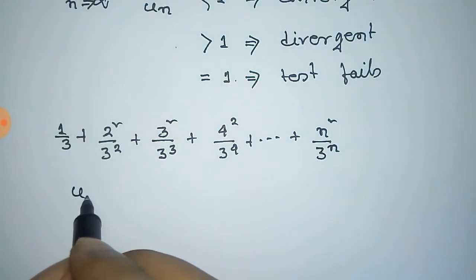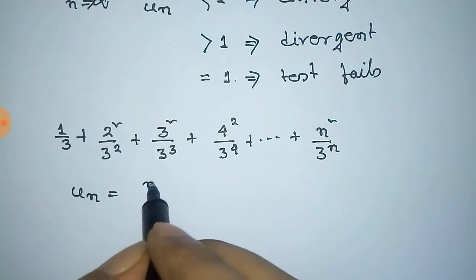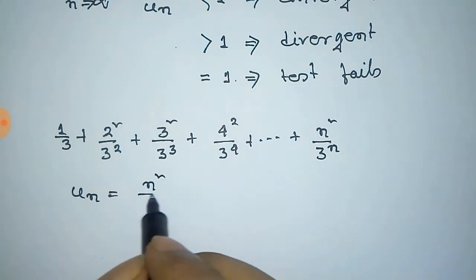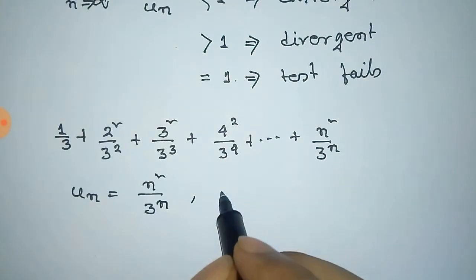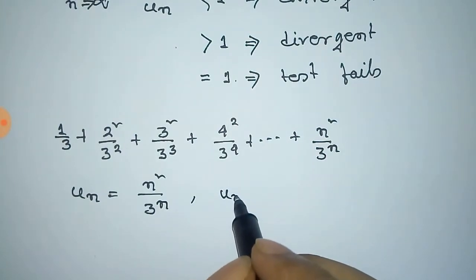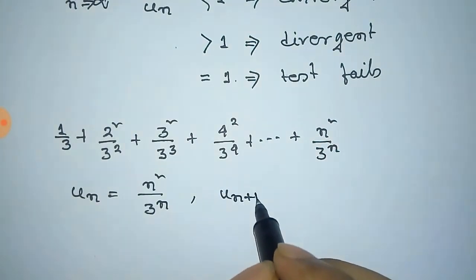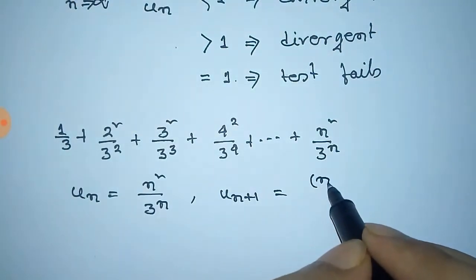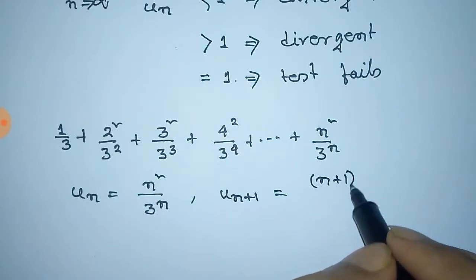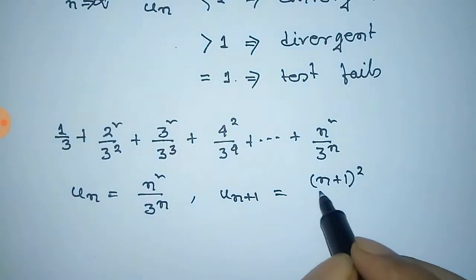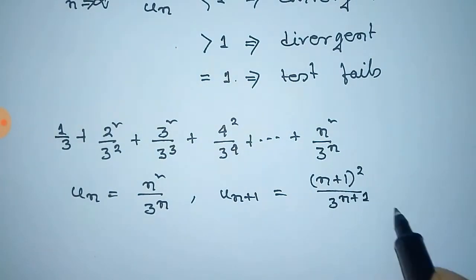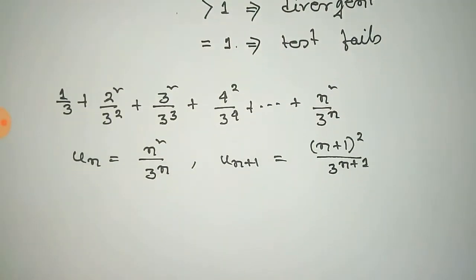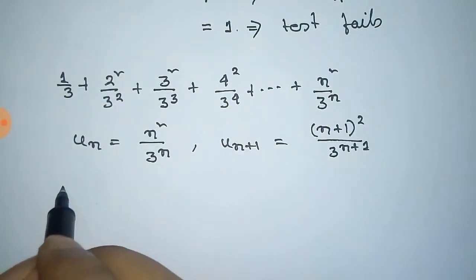We take the nth term: u_n = n² / 3^n. And the (n+1)th term, u_{n+1}, is equal to (n+1)² / 3^{n+1}, obtained by putting (n+1) in place of n.